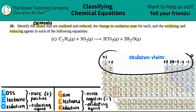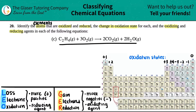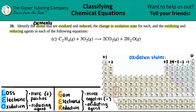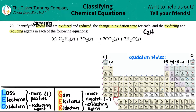The best thing you can do is go from left to right and figure out all of the individual charges of each individual atom throughout the equation. Once you get practice with this it will be a breeze. So let's start from left to right with C₂H₄.